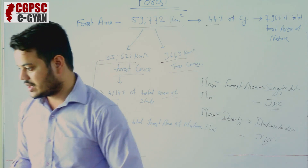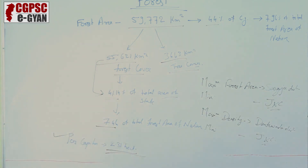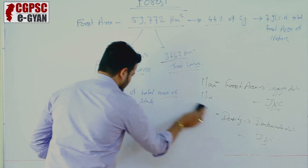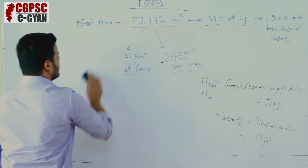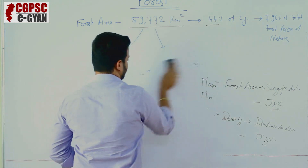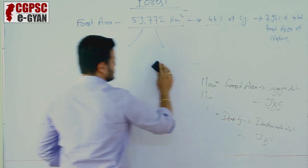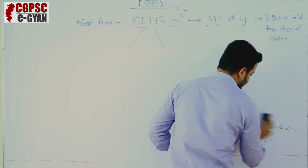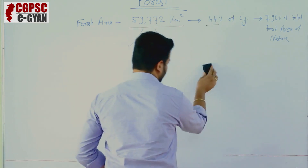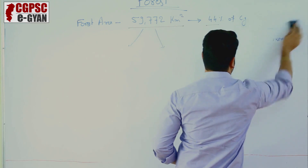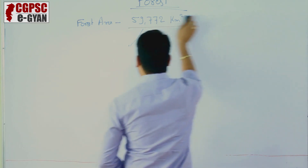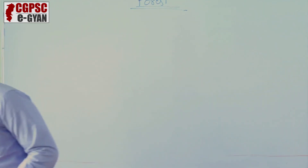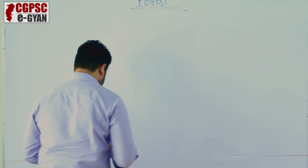Forest classification can be done on three bases: first, on the basis of vegetation; second, on the basis of forest law; and third, on the basis of geographical classification.